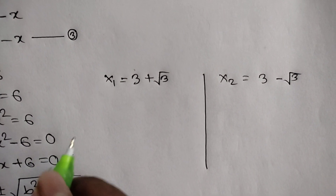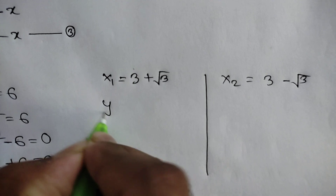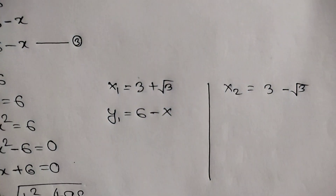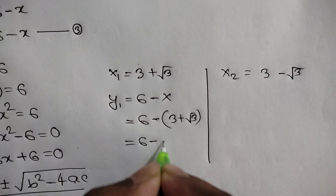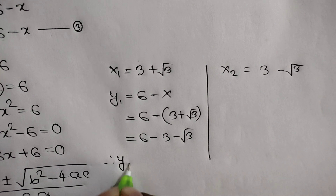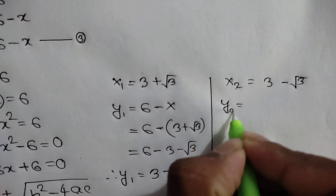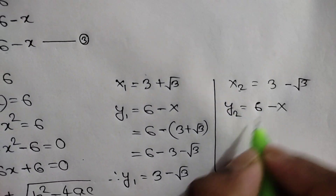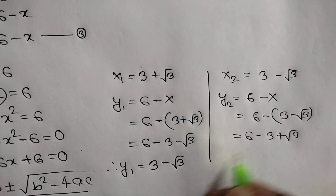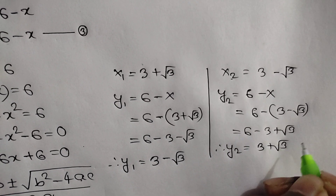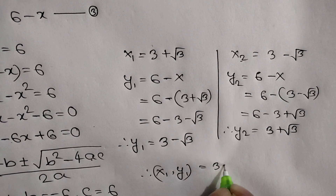Now from equation number 3, y is equal to 6 minus x. When x is equal to 3 plus root 3, y is equal to 6 minus (3 plus root 3), which gives y1 is equal to 3 minus root 3. When x is equal to 3 minus root 3, y2 is equal to 3 plus root 3.